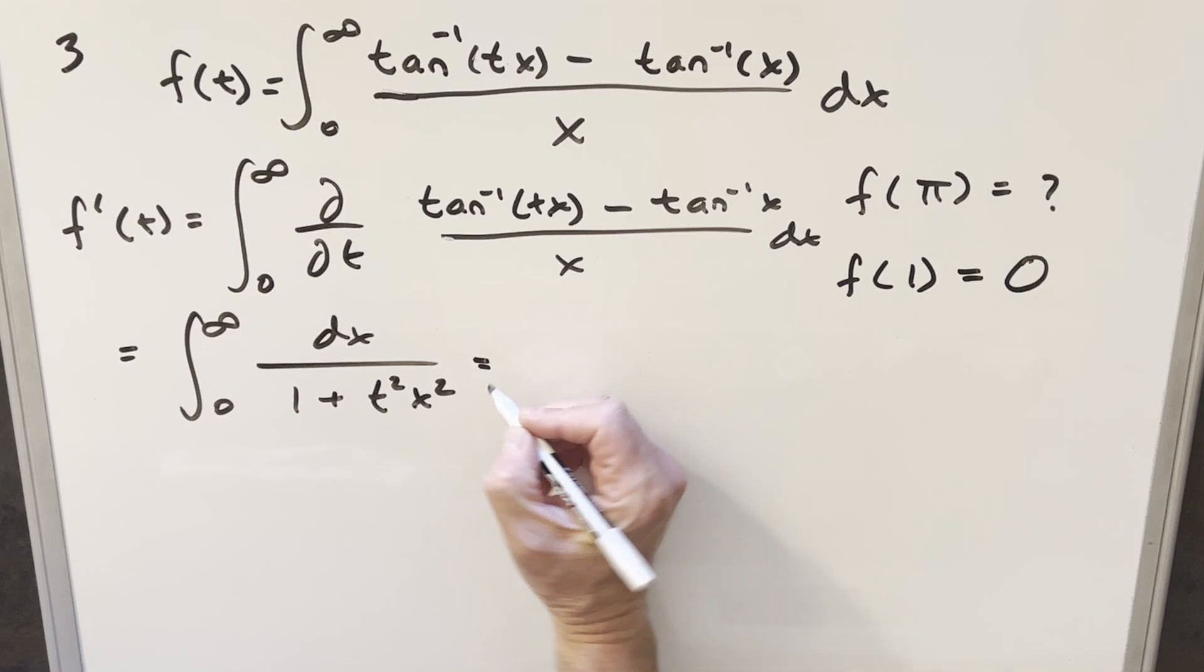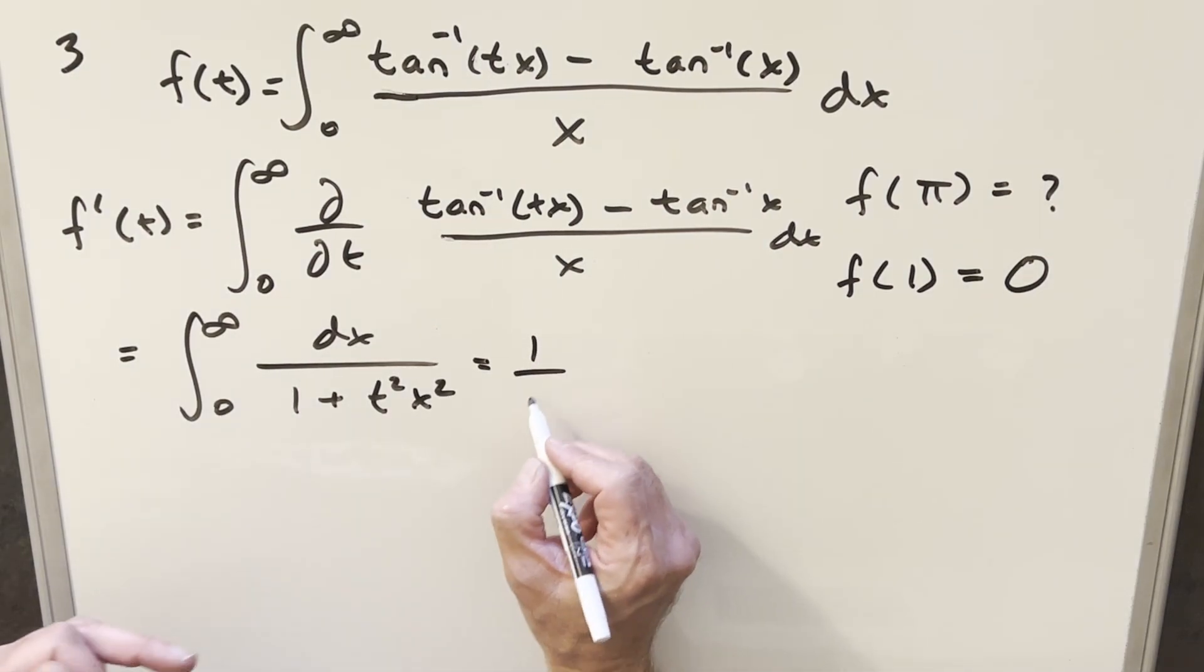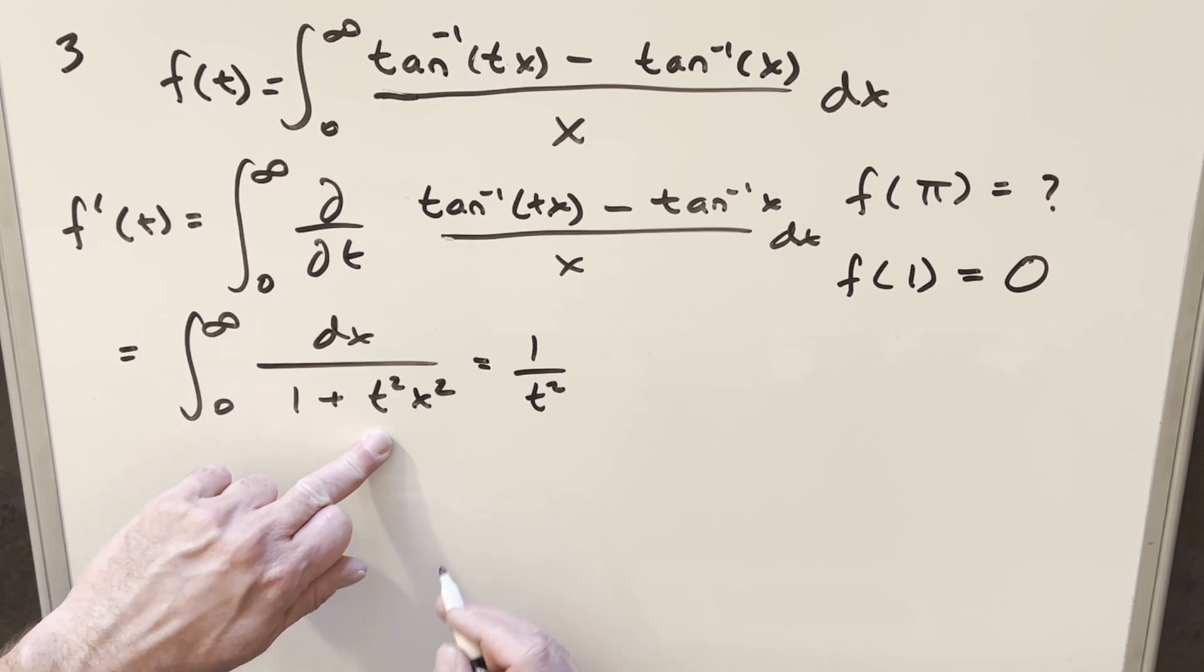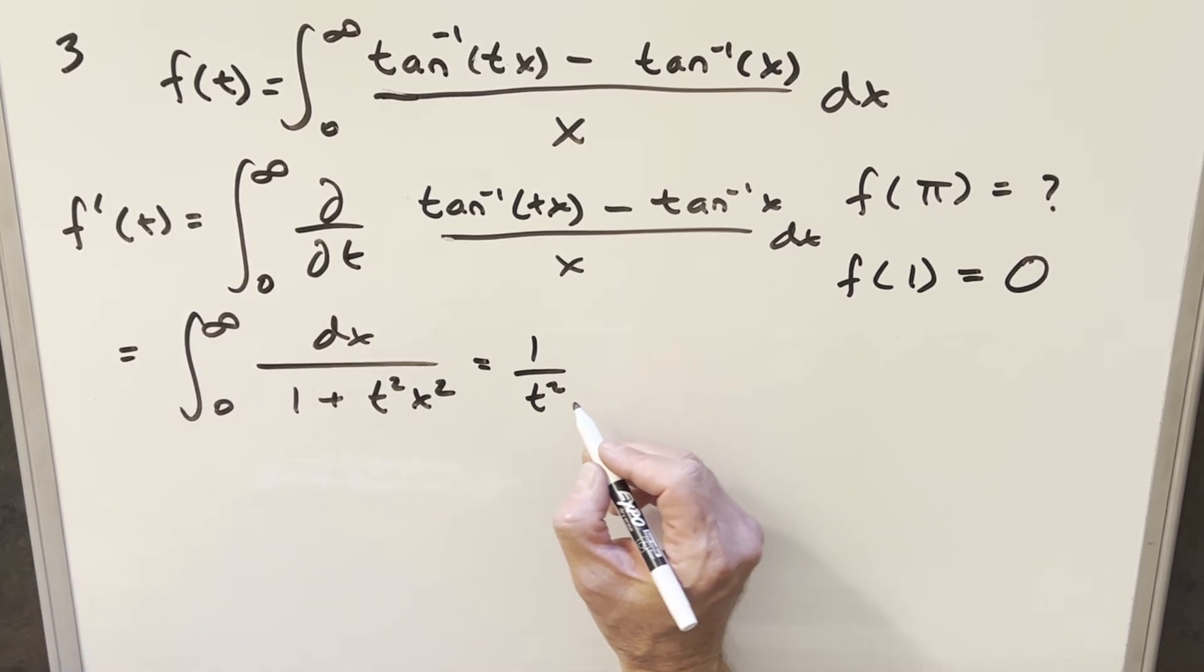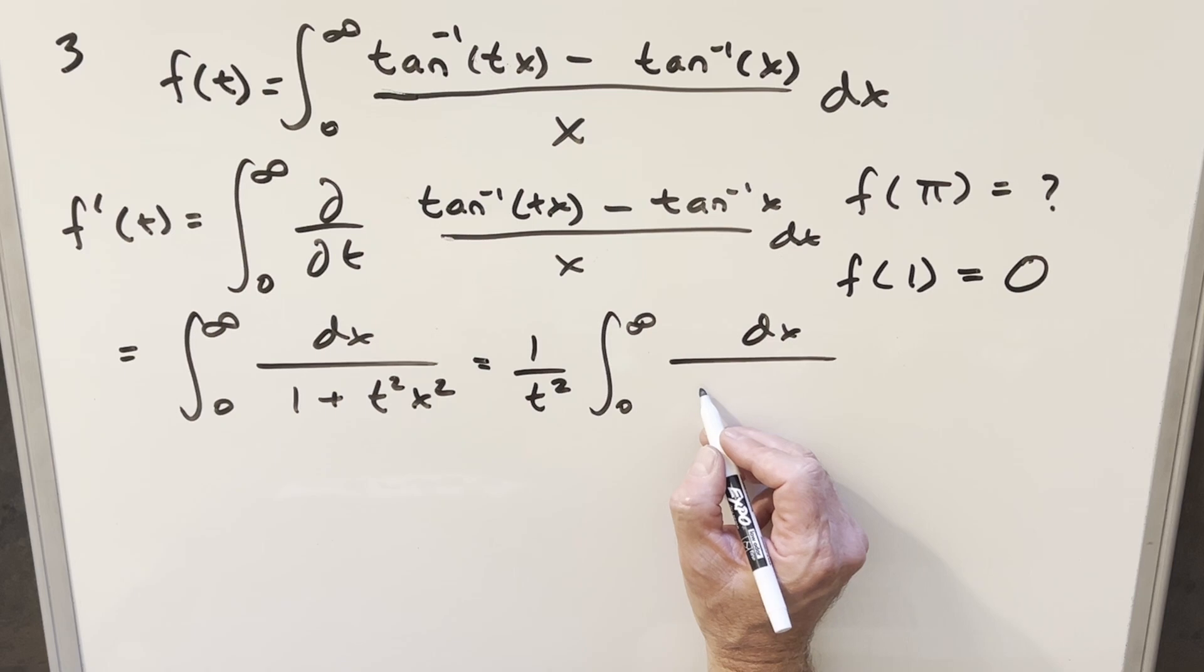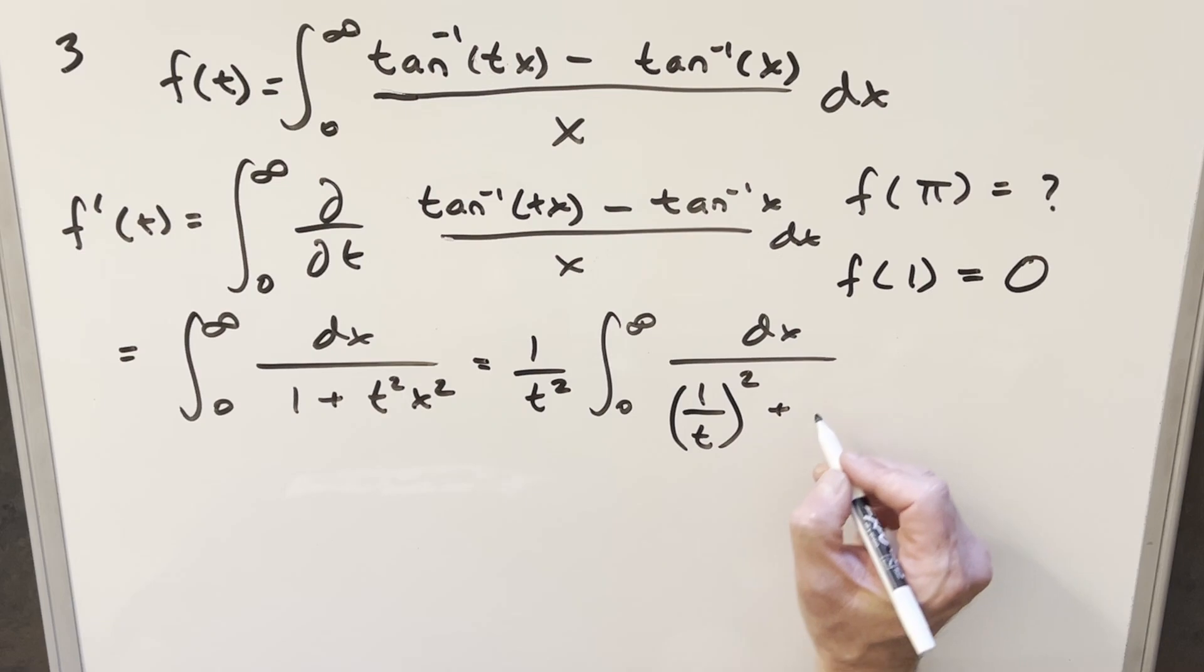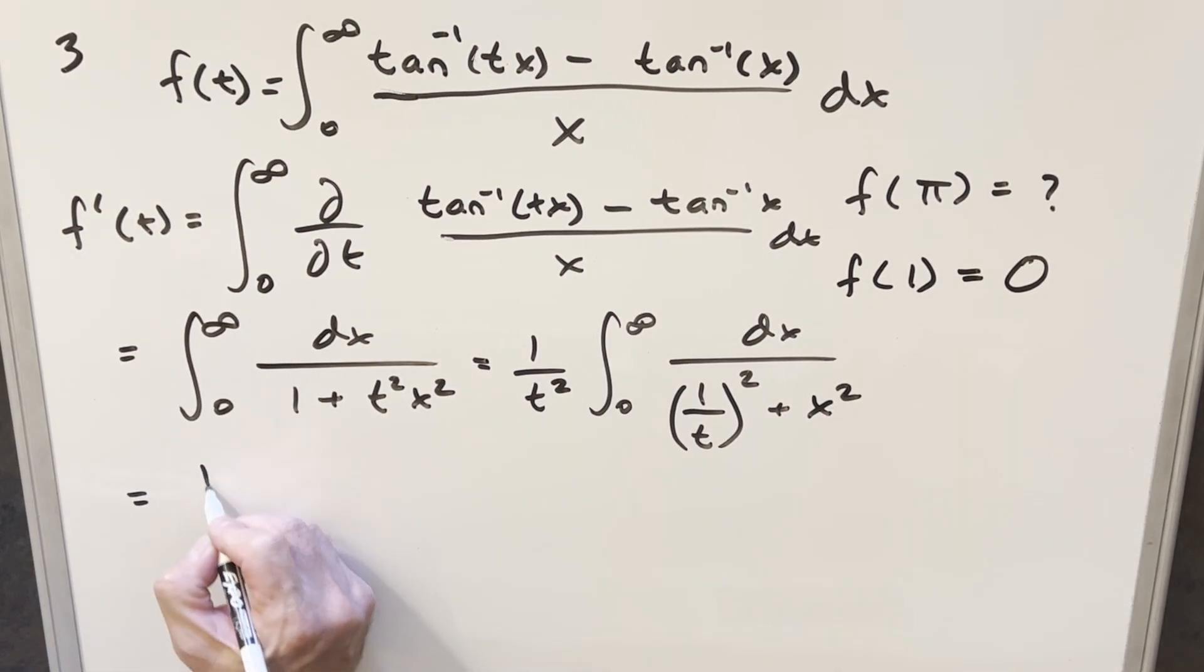But now from here, we almost can integrate this using our arctan formula. But what I'm going to want to do is let's factor one over t squared out front. So we can get rid of the t squared on the x squared here. Then what's going to happen, we're going to have dx. This constant is going to become now one over t squared. But I want to set it up for the formula. So let's write it as one over t all squared plus x squared.